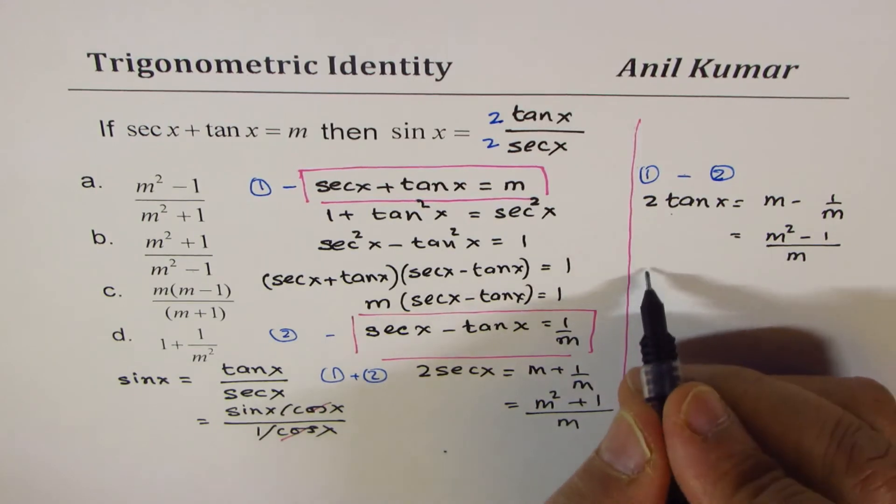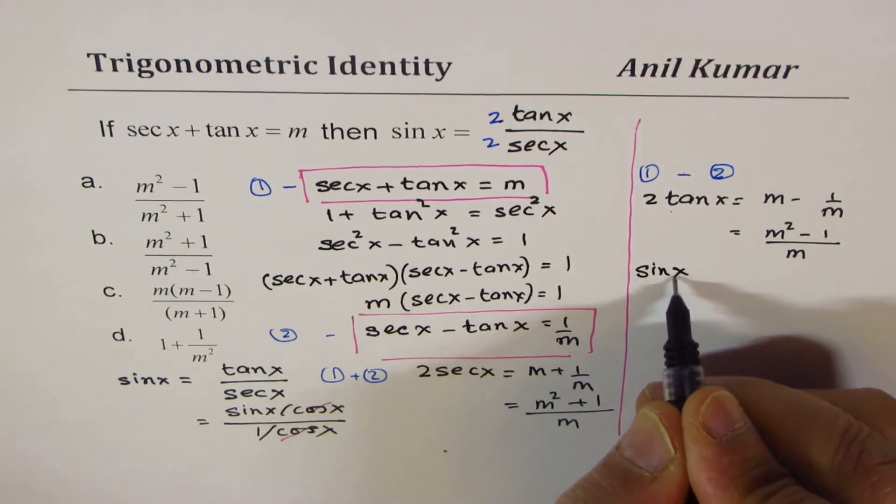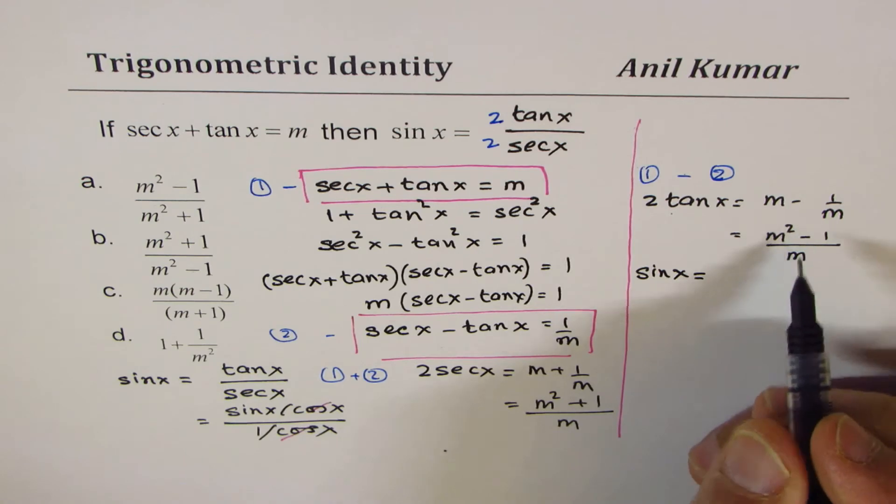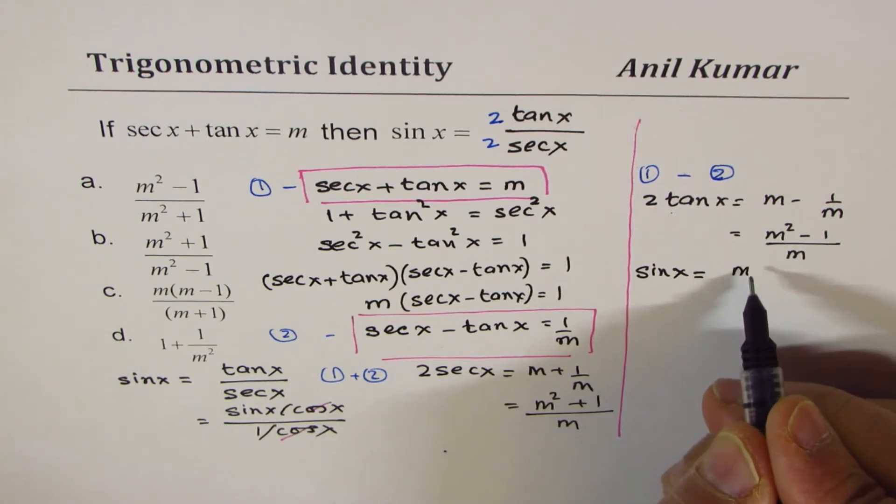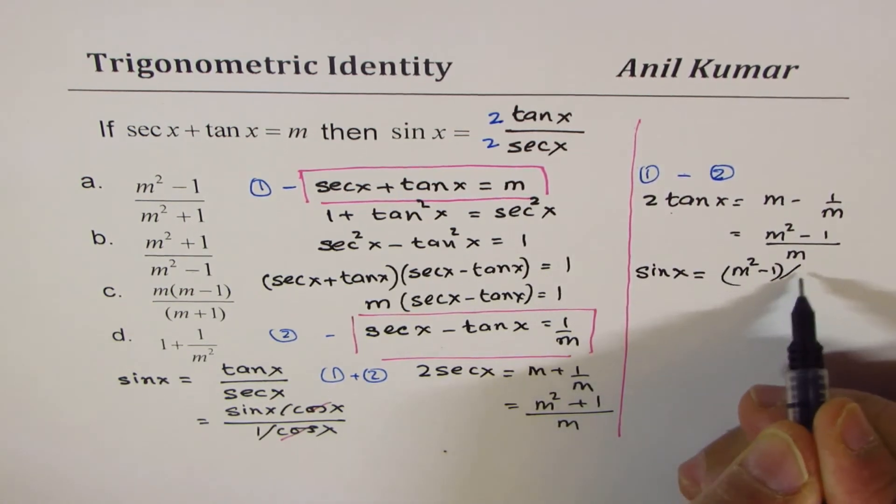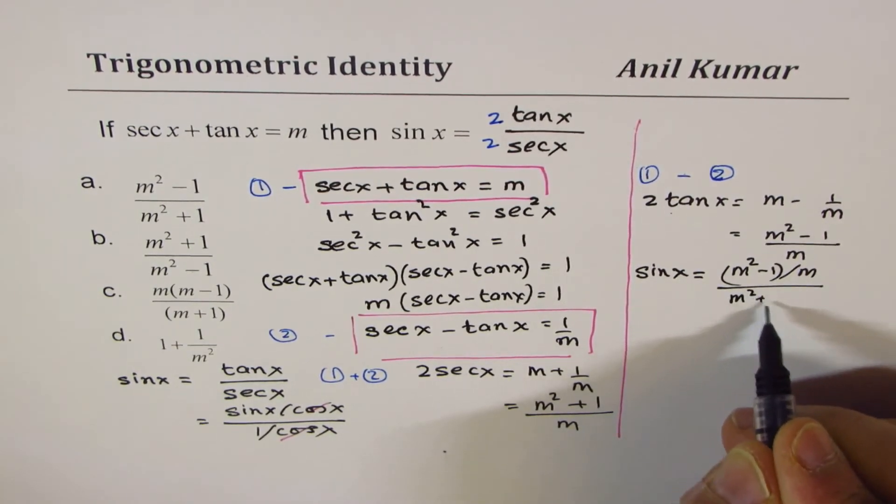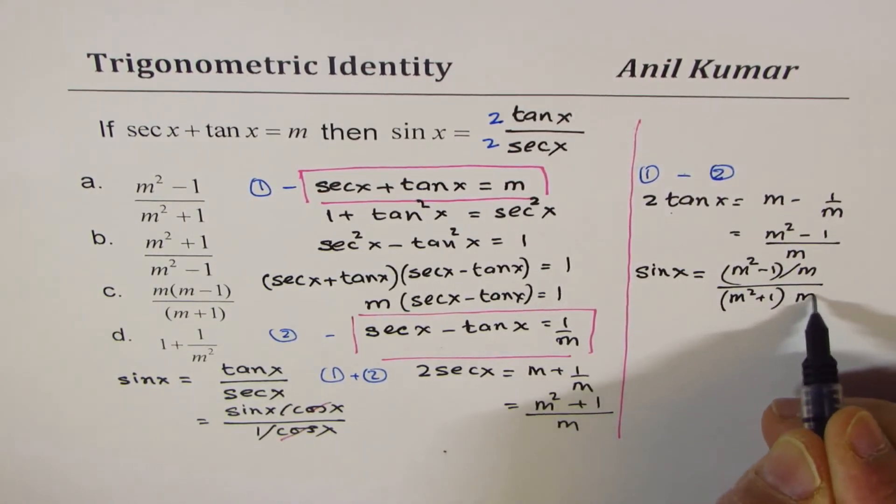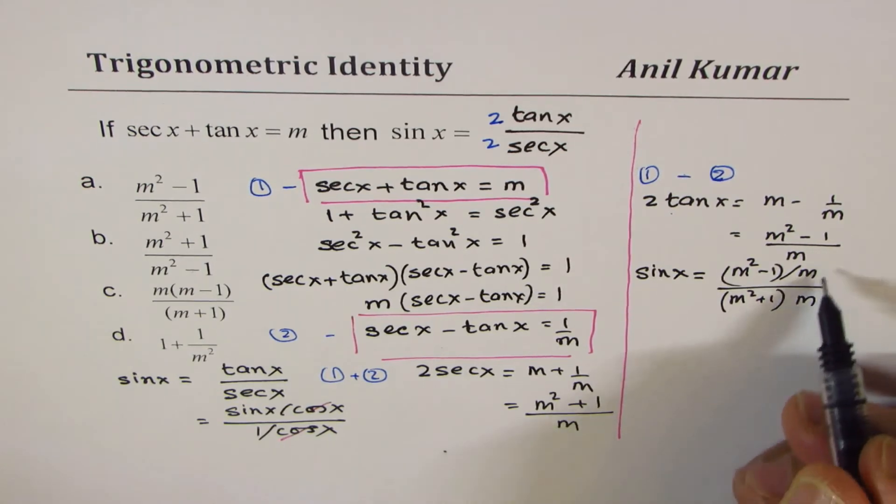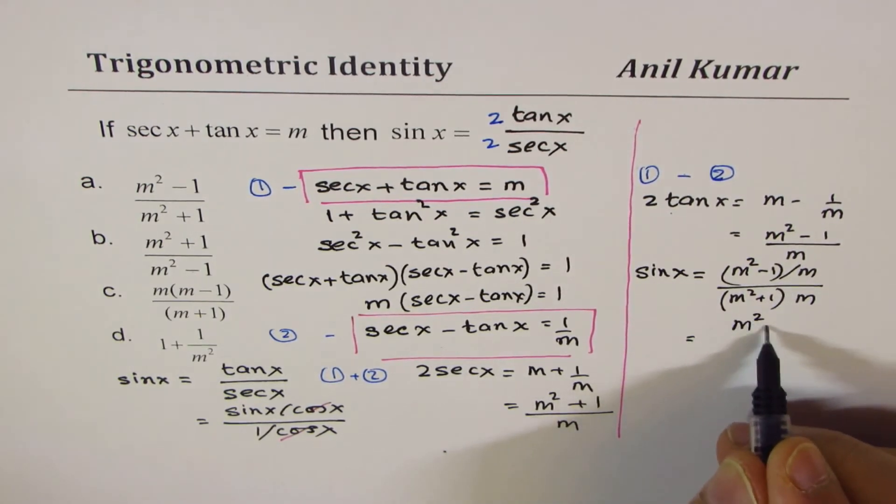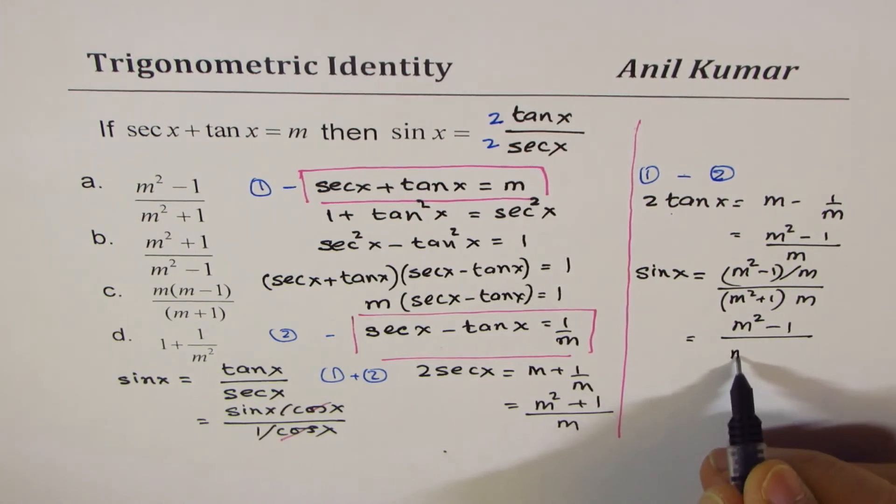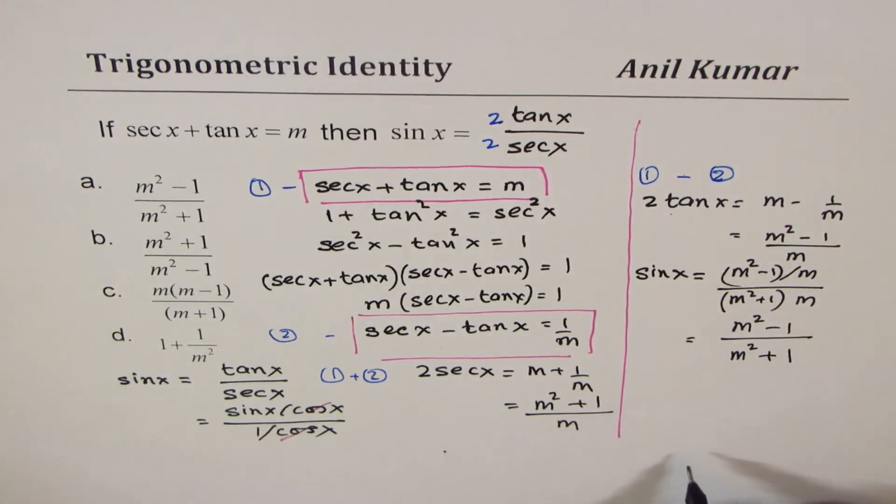So we can now write down what sin x is. So sin x is ratio of these two. So that is m square minus 1 divided by m divided by that, which is m square plus 1 divided by m. So m and m cancel and we are left with m square minus 1 over m square plus 1. Great.